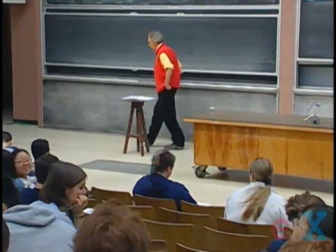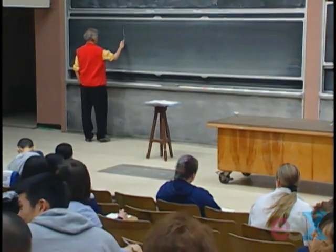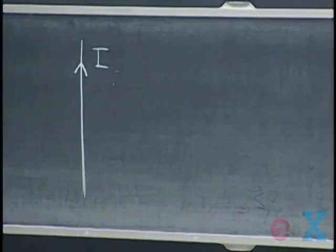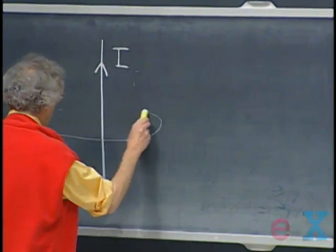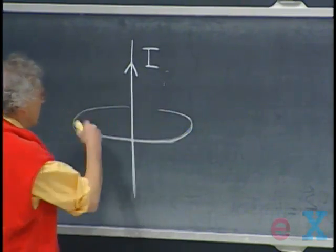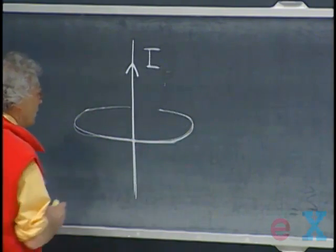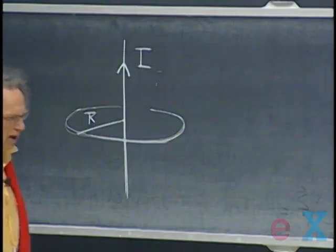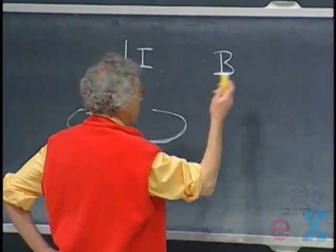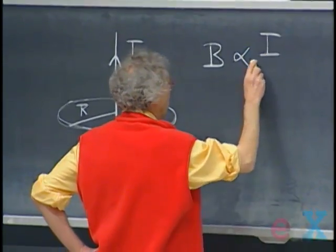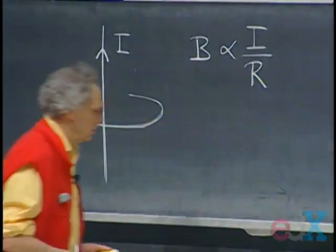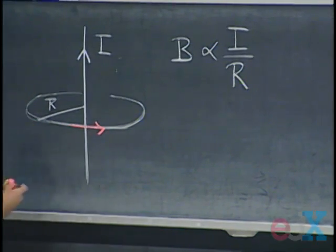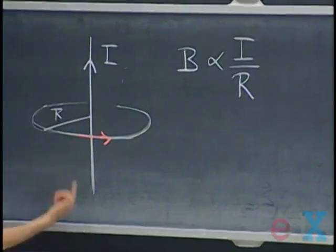When we have a current going through a wire and we look at the magnetic field in the vicinity of this wire, we know from experiments that if you put pieces of magnetite around the wire, they line up in a circle. If that circle has a radius R, then the magnetic field is proportional with the current I and inversely proportional with the radius. By convention, the direction is given by the right-hand corkscrew: rotate this way, the current goes up.